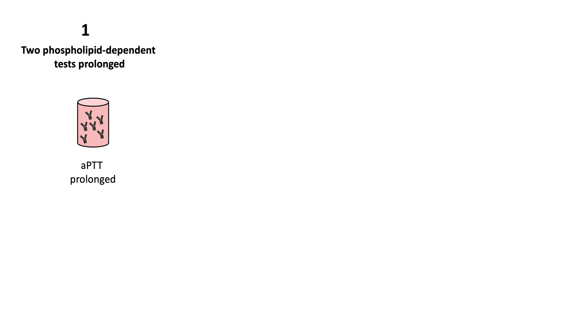Step one is to have two phospholipid-dependent screening tests that are prolonged. Typically, both the APTT and the DRVVT are prolonged. If they are negative and the index of suspicion is high, other screening tests could be performed.